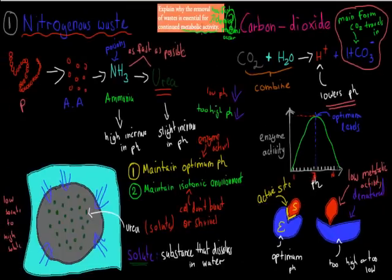So to cover this top one again, explain why the removal of waste is essential for continued metabolic activity. We need to get rid of it to maintain our optimum pH, because our optimum pH is required for enzymes to work at their ideal level. And if enzymes don't work at their ideal level, then our metabolism goes down. So our metabolic activity goes down if enzymes stop working. And the other part was to maintain an isotonic environment, especially if we have too much urea. Then we have an accumulation of urea in our cells. That means water will travel into our cells as well, because of osmosis. And that will mean our cell will burst. And obviously, cells bursting is not good for metabolic activity. So two waste products are nitrogenous waste and carbon dioxide.